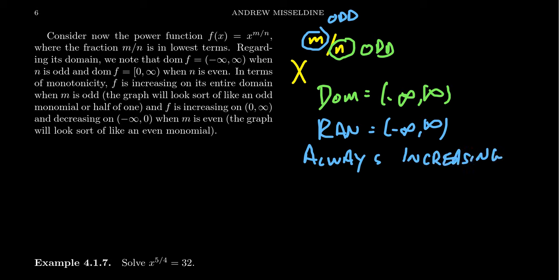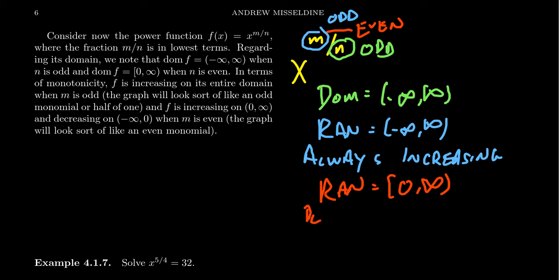On the other hand, if your numerator turns out to be an even number, the range would only be zero to infinity. Like we saw with even monomials, if you square a real number it cannot be negative. So if your numerator is even, you've essentially squared your function, and it won't always be increasing — it'll be decreasing on negative infinity to zero and then increasing on zero to infinity.